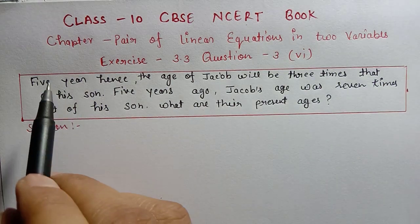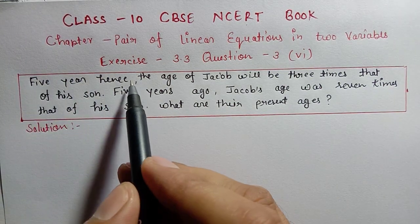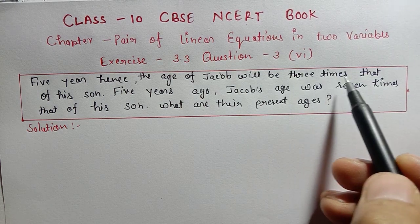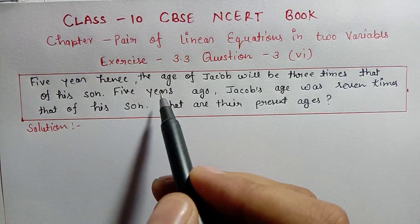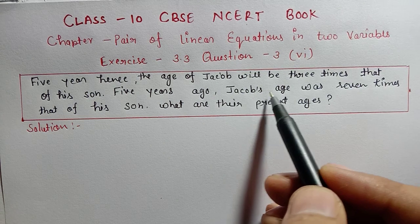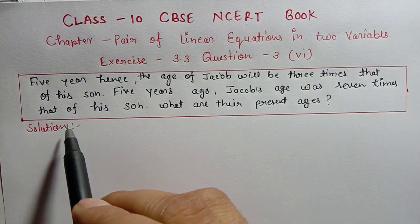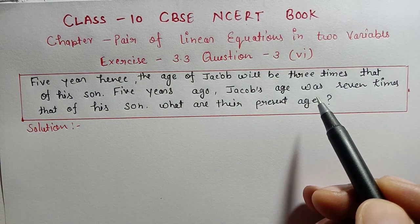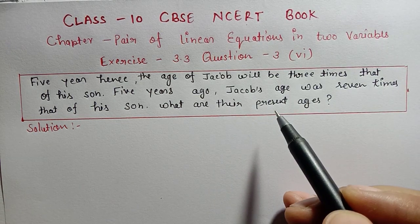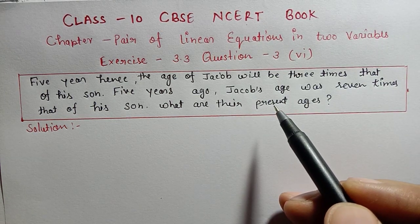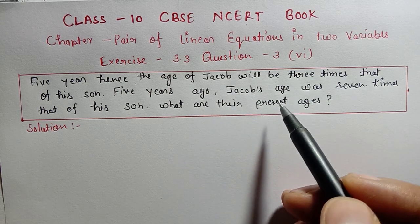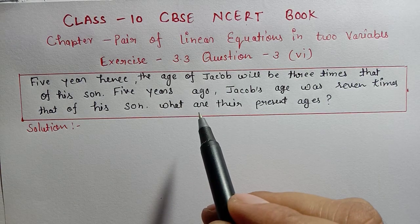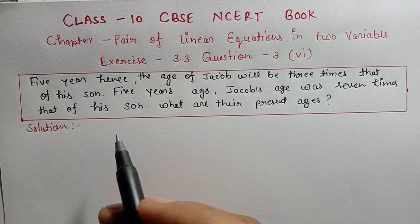The question is: Five years hence, the age of Jacob will be three times that of his son. Five years ago, Jacob's age was seven times that of his son. What are their present ages? So in this question, we have to find the present ages of the father and son, given these two conditions.